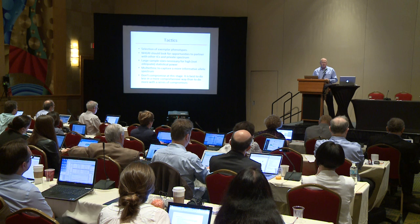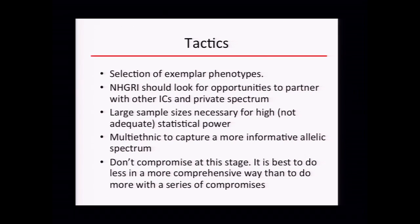The other tactic is, of course, we need to select our exemplar phenotypes. NHGRI should look for opportunities for partnering with other ICs and the private community. We'd be a bit selfish and maybe select some phenotypes depending on the partnerships that could be formed. The sample sizes need to be large — we often write sentences that the power is adequate, but in this particular case the power needs to be more than adequate; the power needs to be high. We don't want to compromise at this stage: it's best to do fewer phenotypes in a very comprehensive way for NHGRI than to do more phenotypes with more partnerships requiring compromises along the way.